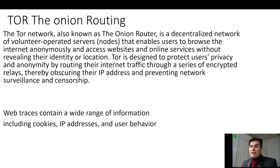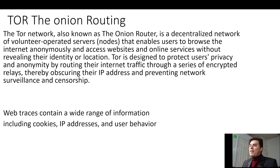The Onion Routing — the Tor Network, also known as the Onion Router, is a decentralized network of volunteer-operated servers, or nodes, that enable users to browse the Internet anonymously and access websites and online services without revealing their identity or location. It's designed to protect your privacy and anonymity by routing Internet traffic through a series of encrypted relays, thereby obscuring the IPs.